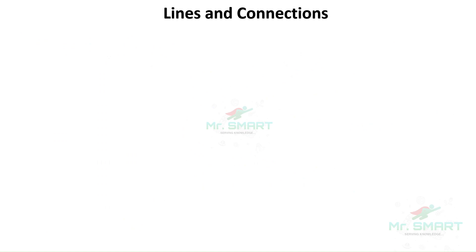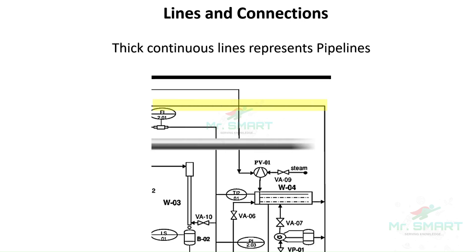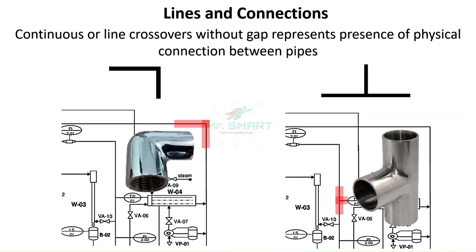The next important thing to notice in a P&ID is the lines and connections used in it. Lines are used to define many things that we need to understand. A thick continuous line in a P&ID represents pipeline connections. Wherever you see a straight line connecting some equipment or instruments, it shows they are connected with a pipe physically. Continuous lines or line crossovers without a gap represent a physical connection between pipes. If you notice a line shaped like an L or T in the drawing, they are denoting an L-bend or T-joint to be made at those points physically.